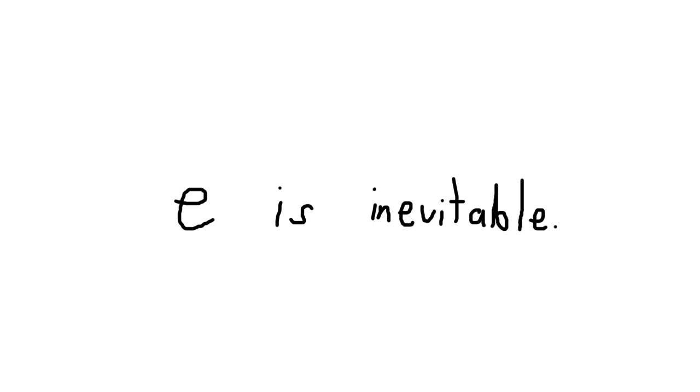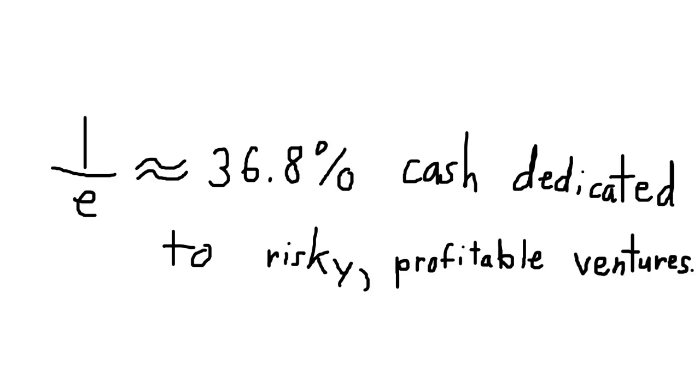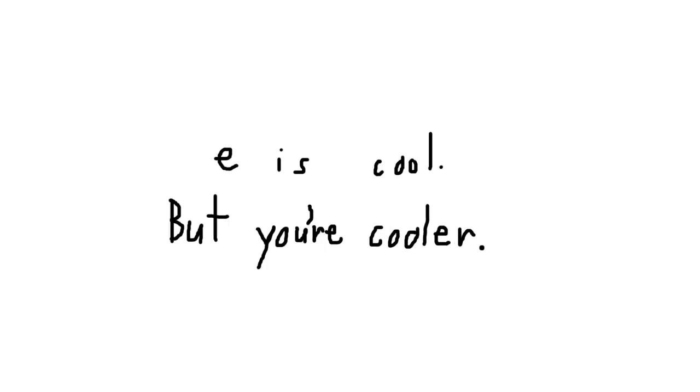E is the value used for continuously compounded interest. The proportion of your cash on hand at any given time that should be put towards risky ends where the expected value is greater than zero just happens to be 1 divided by e, which is roughly 36.8%. E is a really cool number.